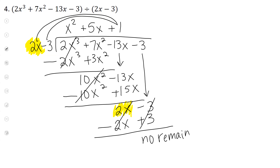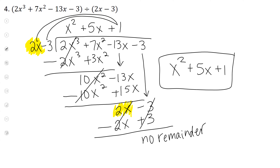Your answer is x squared plus 5x plus 1. This is your answer, and we call the answer to a division problem a quotient.